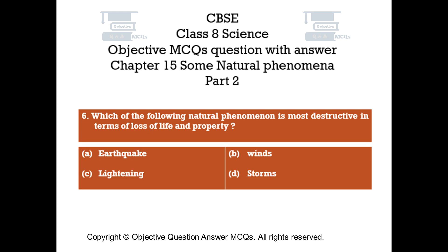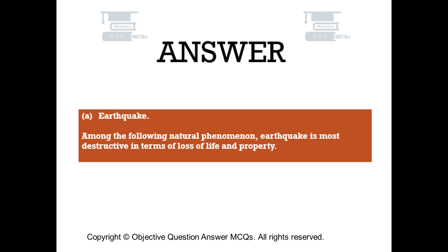Question number 6: Which of the following natural phenomena is most destructive in terms of loss of life and property? Option A: Earthquake. The right answer is Option A — Earthquake. Among the following natural phenomena, earthquake is most destructive in terms of loss of life and property.